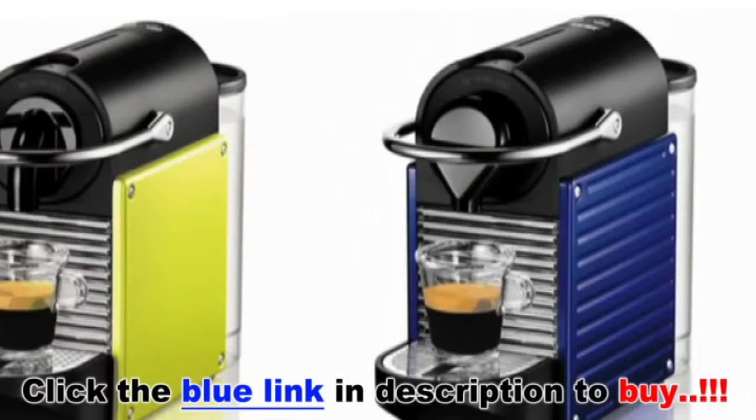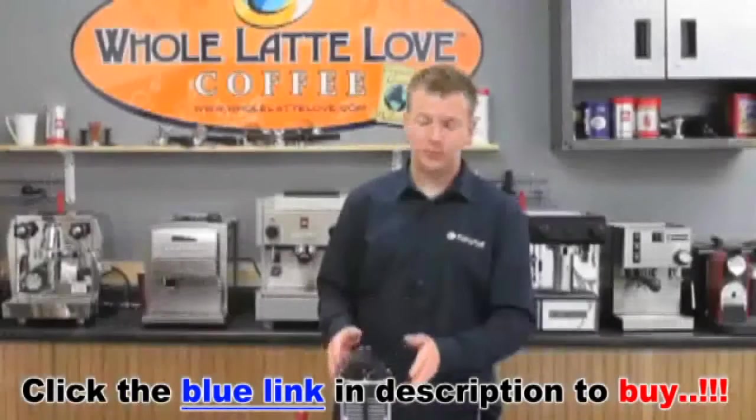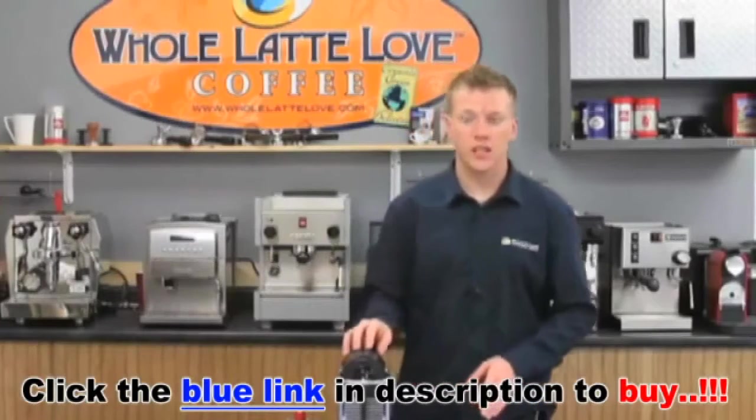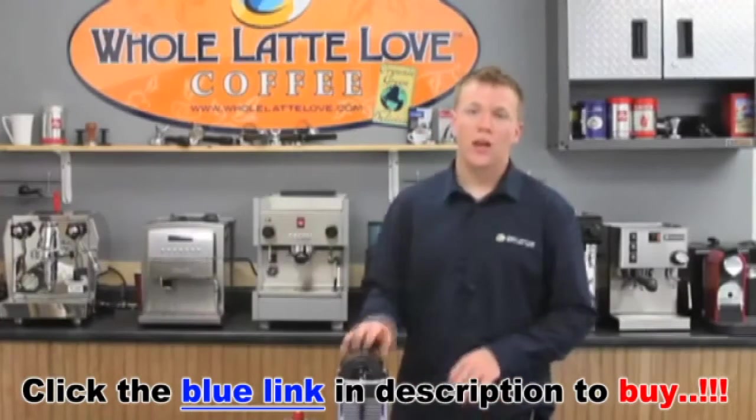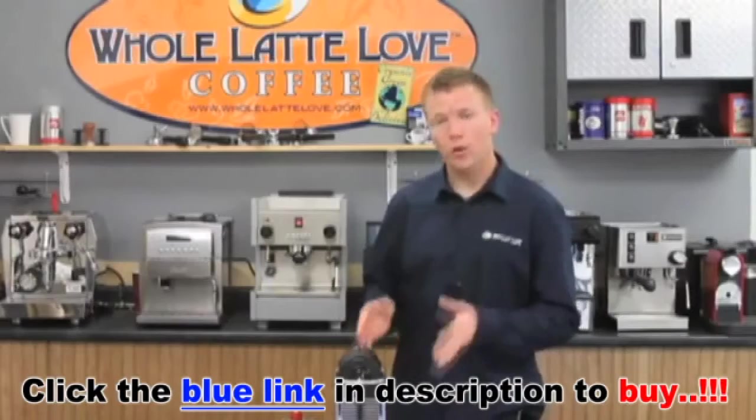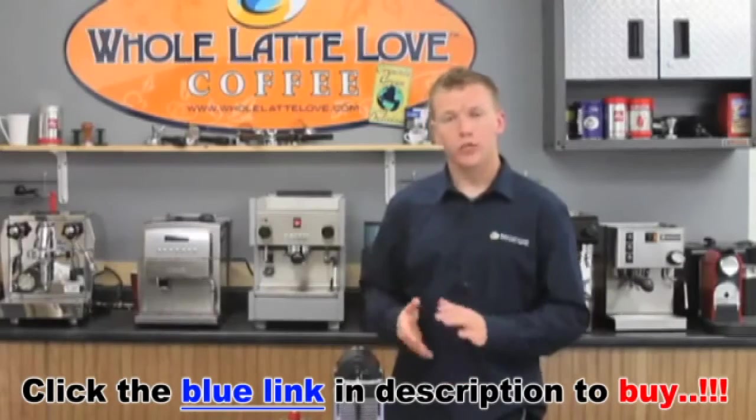There is a D60 and a C60, and the only difference between the two is the pattern on the side panel. Here we have the D60 in the steel blue model. In this video, we're going to show you more about the machine and actually brew some shots with it, so let's get going.